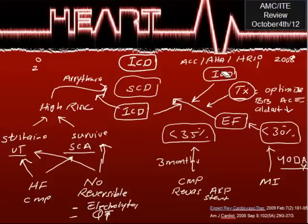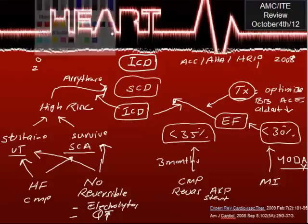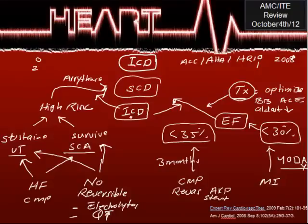So this is the ICD indication summary. ICD comes at the end — when you have ensured no reversible causes in secondary prevention, and when you have confirmed optimized therapy after AMI for more than 40 days in primary prevention. Thank you.